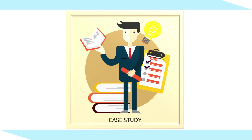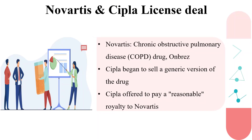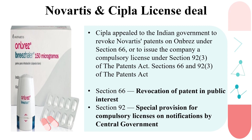Now let's see some case studies wherein different kinds of patent licenses were worked out by different pharmaceutical companies in the past. Novartis had a patent on a chronic obstructive pulmonary disease drug, and CIPLA began to sell a generic version of the drug despite Novartis's patent. When a lawsuit was initiated by Novartis, CIPLA offered to pay a reasonable royalty — this is a kind of involuntary license executed between CIPLA and Novartis. CIPLA also appealed to the Indian government to revoke the Novartis patent under Section 66 and Section 92, however the Indian government did not find merit in CIPLA's argument that a compulsory license should be issued under Section 92.